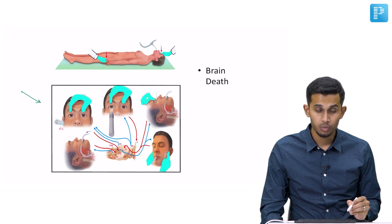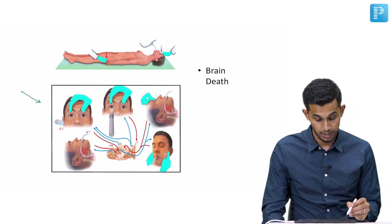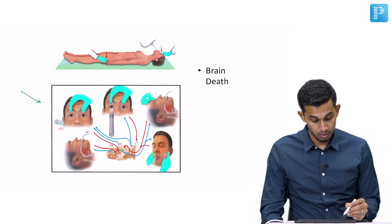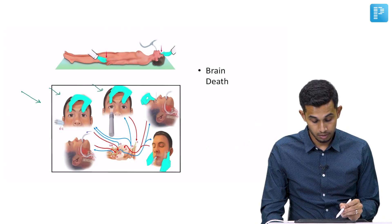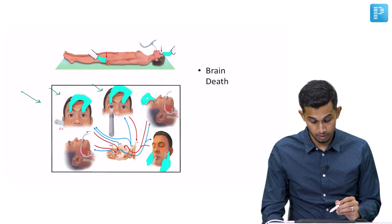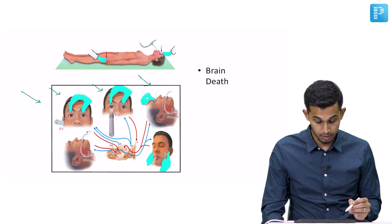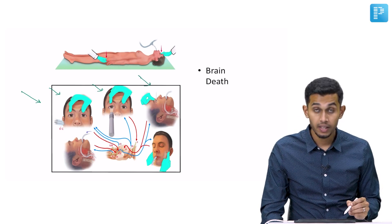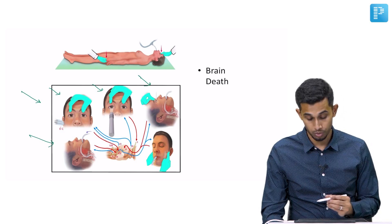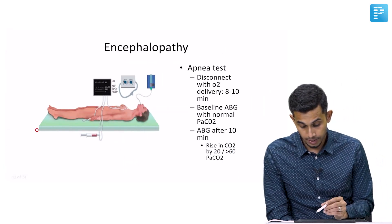These are the reflexes we have to check before confirming brain death: the caloric test, the pupillary or light reflex, the corneal reflex, and the gag reflex. After these, we have to do the apnea test.